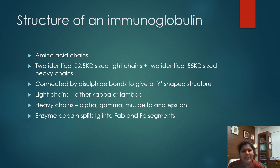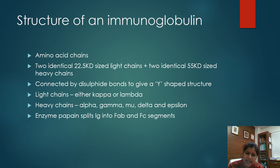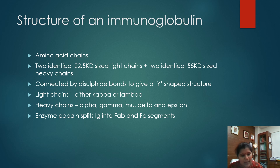Coming to the structure of an immunoglobulin — it is nothing but amino acid chains. There are two identical 22.5 kilodalton light chains with two identical 55 kDa heavy chains. These chains are connected by disulfide bonds to give a Y-shaped structure. The light chains can be either kappa or lambda. The heavy chains can be alpha, gamma, mu, delta, and epsilon.